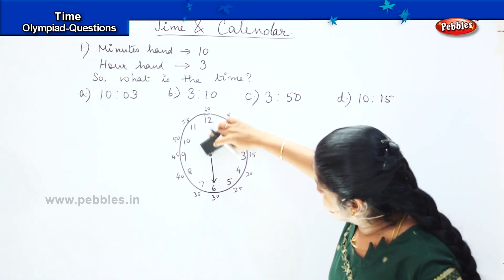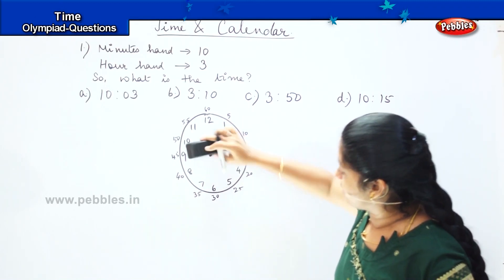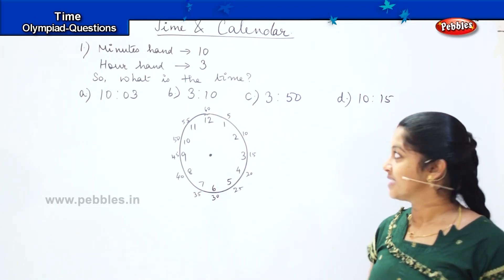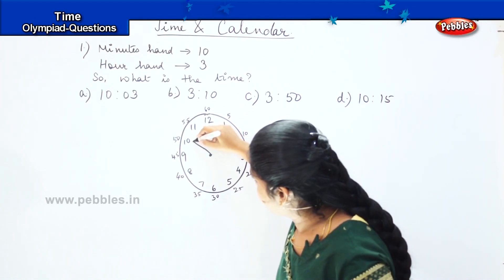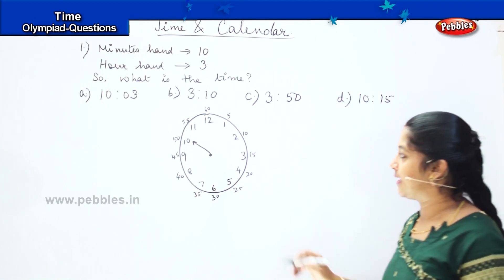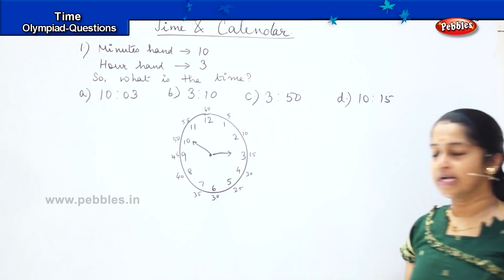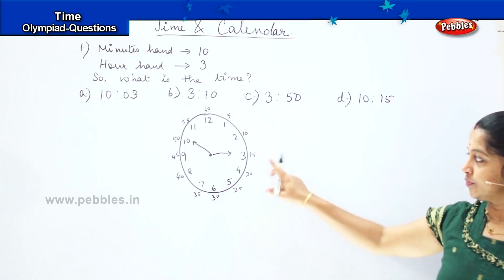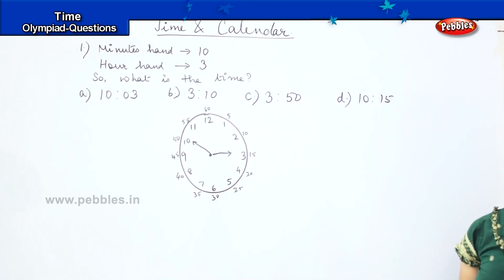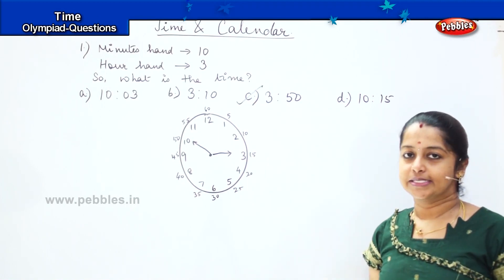I will be erasing the needles as well. So now, my minutes hand, which means the longest needle, is in 10, and my hour hand, which means my small needle, is in 3. So what is the time now? 3 and here it is 50, so where can you find 3:50? Option C is my right answer.